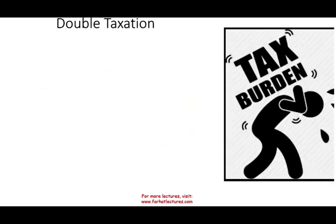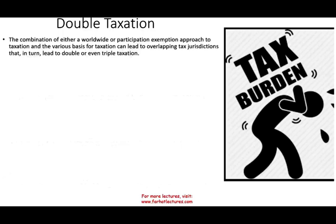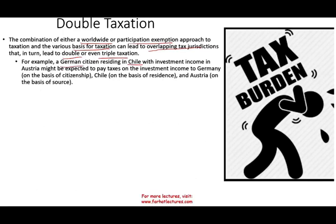Because we have different scopes and different bases, an individual or company could be subject to more than one tax at the same time. The combination of a worldwide or participation exemption approach with various bases of taxation can lead to overlapping tax jurisdiction, resulting in double or even triple taxation. Consider a German citizen residing in Chile with investments in Austria — this individual might be expected to pay taxes in Germany based on citizenship, in Chile based on residency, and in Austria because the income was earned there.